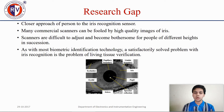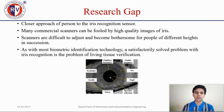Research gap: there are many difficulties in using an iris image or iris recognition sensor. The close approach of a person to the iris recognition sensor is one issue. Many commercial scanners can be fooled by high quality images of an iris. Scanners are difficult to adjust and become bothersome for people of different heights in succession. As with most biometric identification technologies, a satisfactorily solved problem with iris recognition is the problem of living tissue verification.